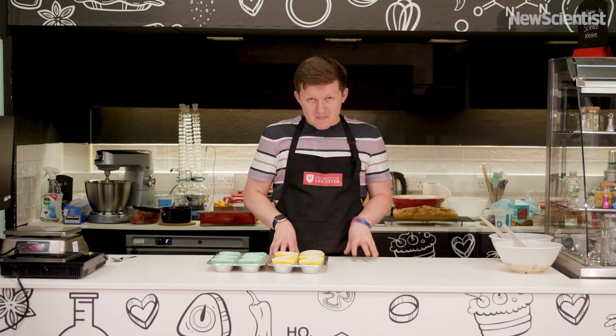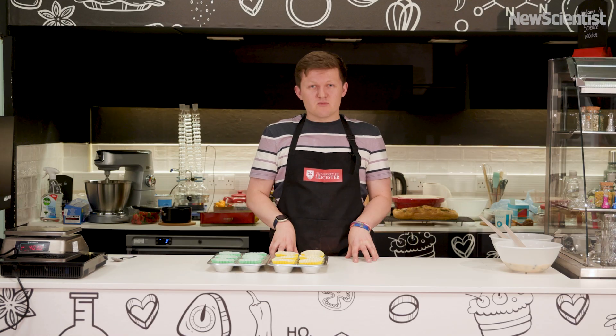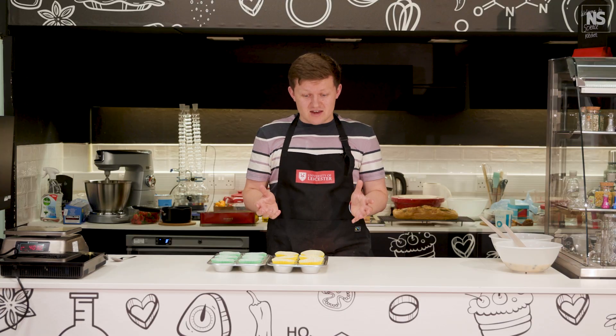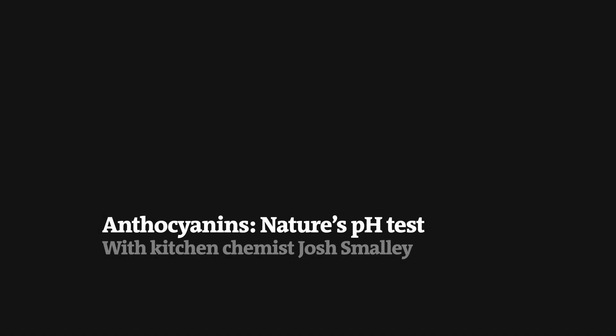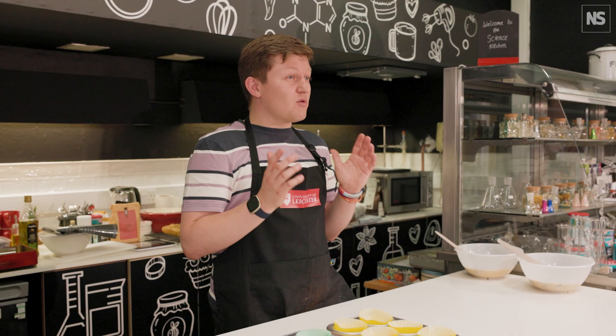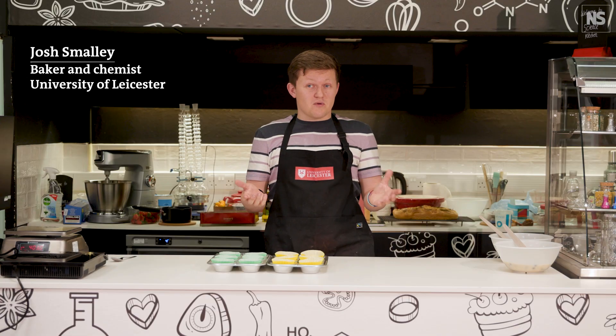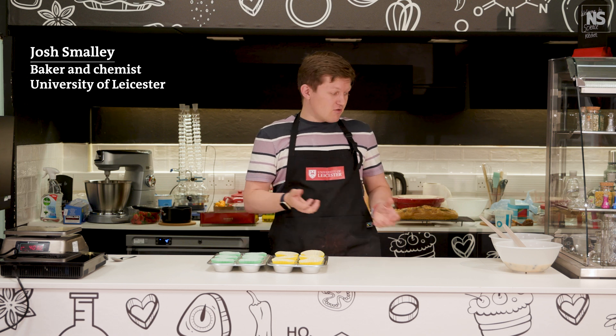I've prepared a couple of muffin batters to demonstrate a class of coloured pigments found in blueberries called anthocyanins. Anthocyanins are found in pretty much all fruits and vegetables. They can also act as pH indicators, displaying different colours in different pH conditions.